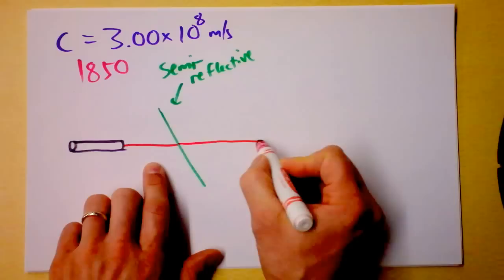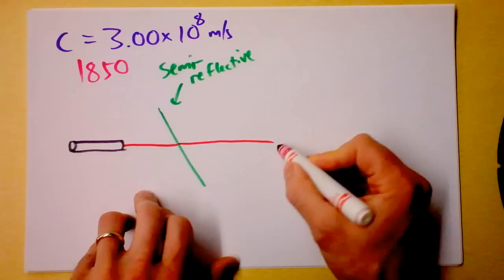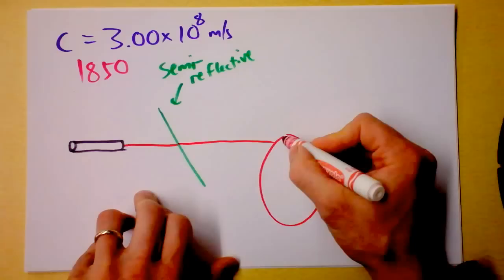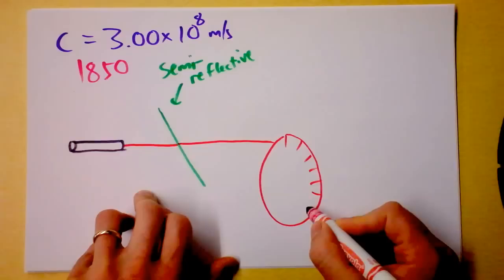And the device was like, let me kind of draw it for you. It's like this circle, but it wasn't a complete circle. It had these notches in it, which had little holes in them. And let's say that it had 20 holes in it. Something like that.